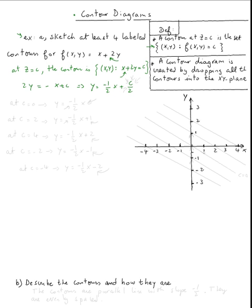So a contour is always a line. So let's just sketch some of them. For example, at c equals zero, what do we have? Plug zero here, you'll get y equal negative one half x. And of course to plot this point, the y intercept is zero and the x intercept is zero.